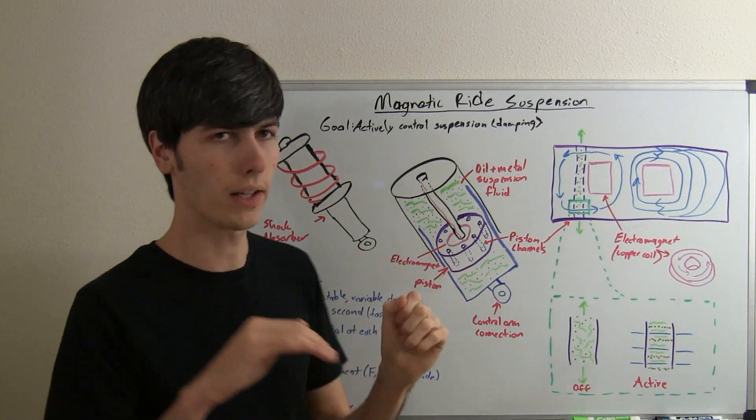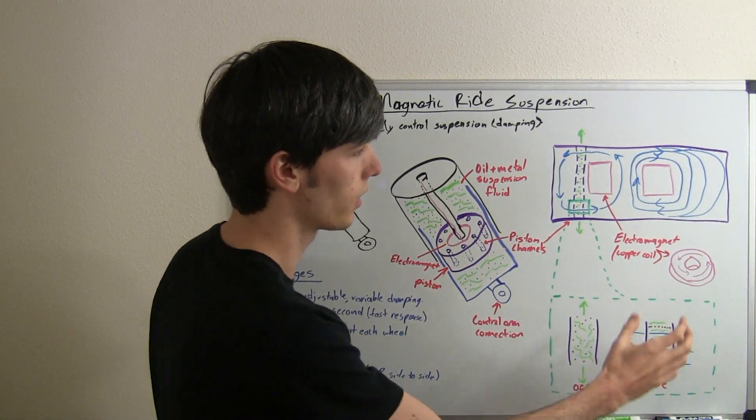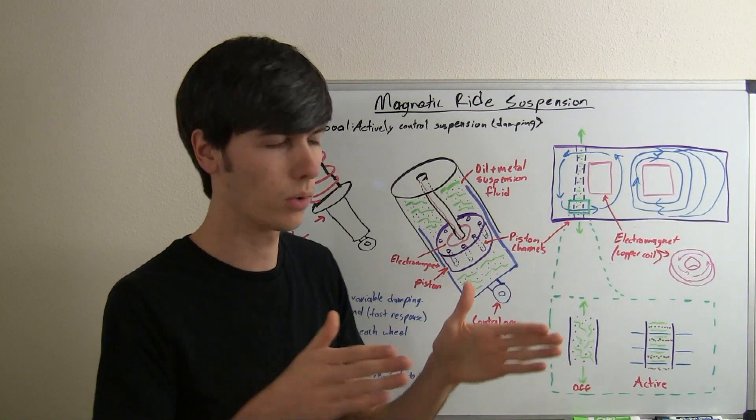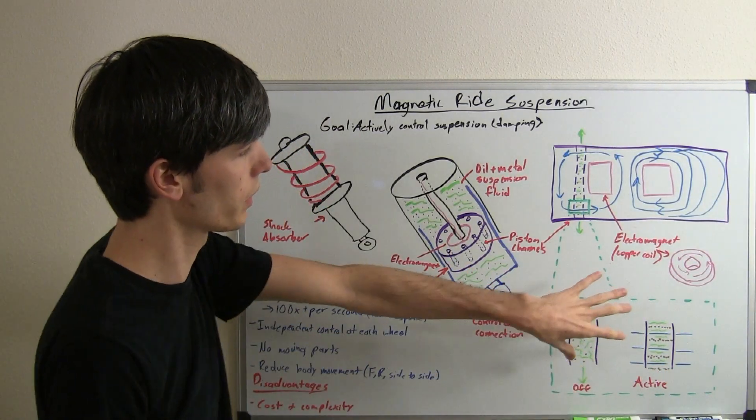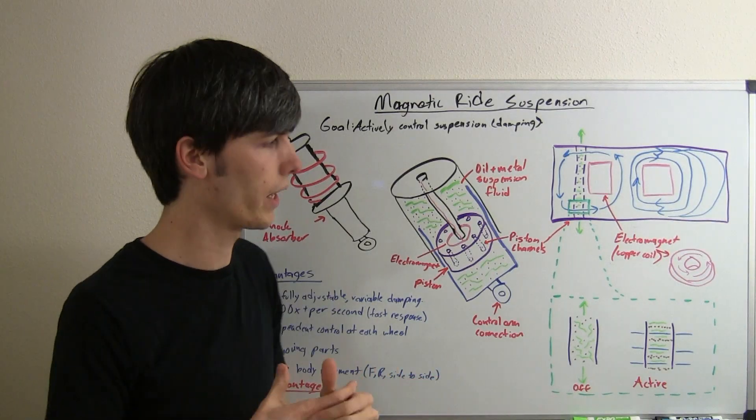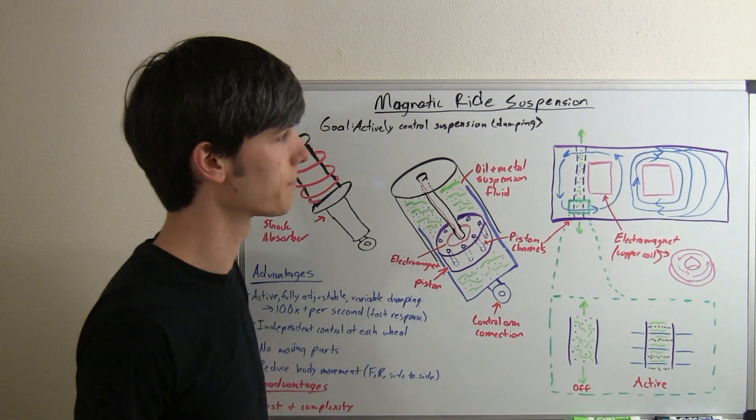If you want it to be really stiff, like say you're going around a corner and you don't want any body roll, well, if you activate this and you send a high current through it, you're not going to roll at all because it's not going to allow that fluid to pass through. So, you can really change the characteristics of how the car handles just by varying how much voltage you send through this electromagnet.